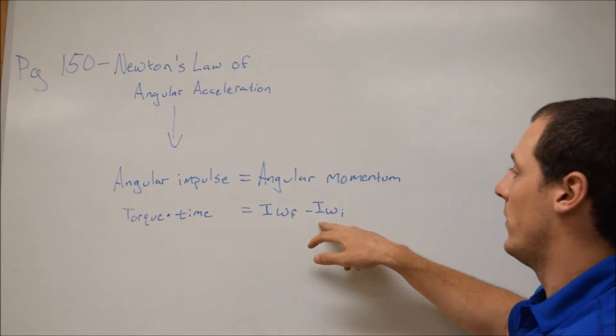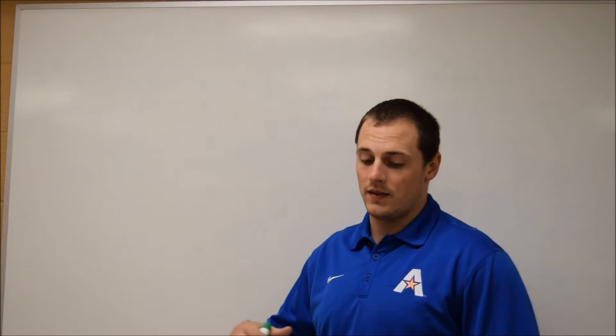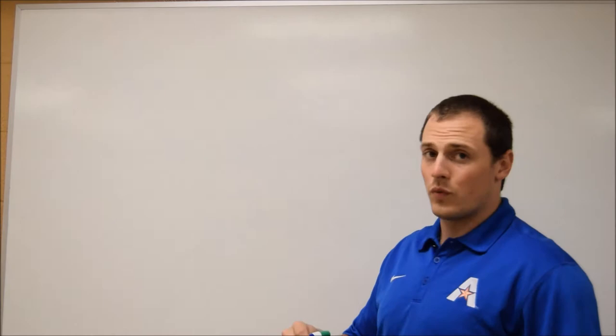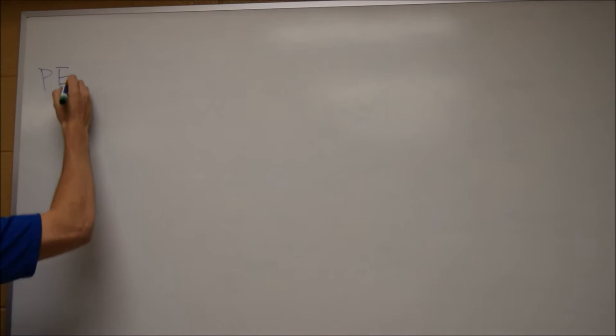So for the angular impulse stuff, the first problem that we're going to look at is number one, which deals with attaining the height. But this time we're going to be using energy. So it involves a few steps but it's really simple because it's just plugging in numbers to four equations. The first thing that we need to do is we need to solve for potential energy, then we need to solve for kinetic energy, then we need to solve for total energy, and then from that we can determine height.